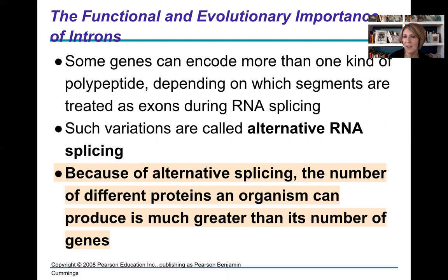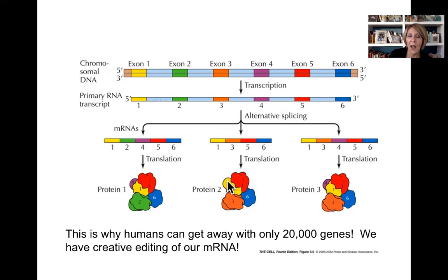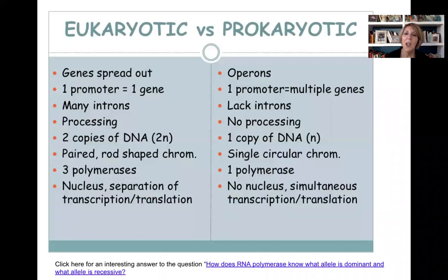What is the evolutionary importance of introns and exons? This is why humans can get away with so few genes — because of alternative RNA splicing. We can cut out different sections of introns depending on what protein needs to be made, then splice the remaining exons together in different ways to make different proteins. With the same piece of chromosomal DNA, three different post-transcriptional editing patterns can produce three different messenger RNAs and thus three different proteins from the same section of DNA.